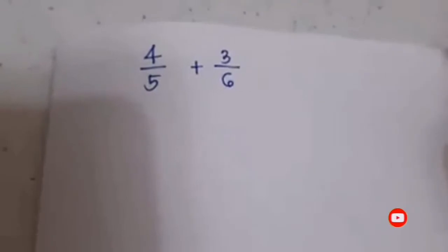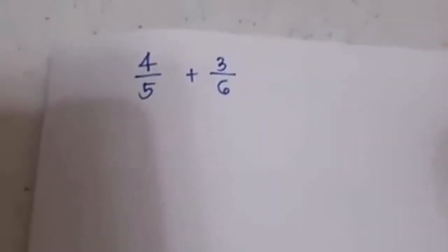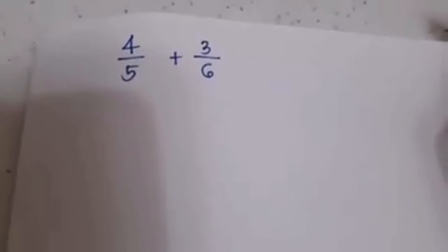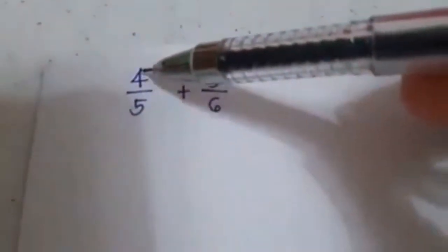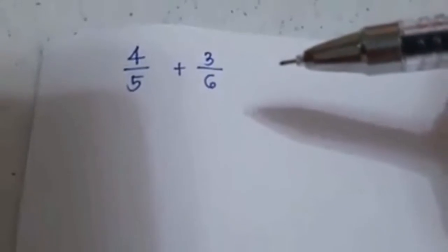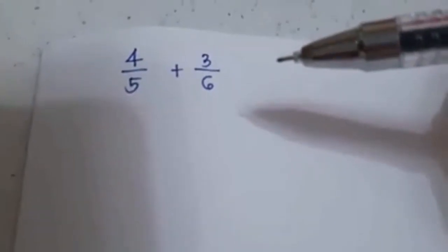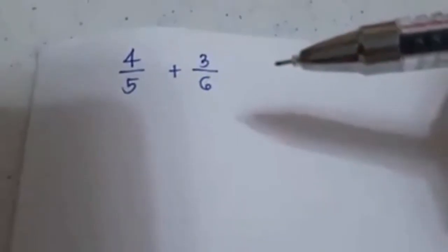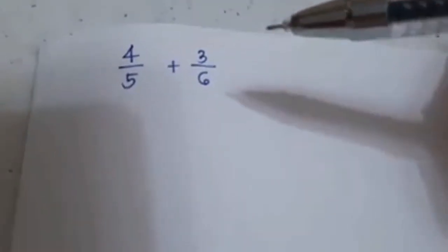Here's the addition of dissimilar fractions. We begin by examining the fraction four fifths plus three sixths. Since these are dissimilar fractions, we need to convert them to similar fractions first. Remember that when you add and subtract fractions, all you have to do is add the numerators and copy the denominator. But we cannot do that because the two fractions are dissimilar.